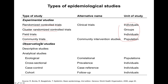Under observational studies, we have both descriptive studies, where we don't typically have control groups and are often trying to describe a problem within a population to identify factors possibly related to health problems that might warrant further study, and analytical studies. We will be discussing all of these in the later parts of this series of lectures.